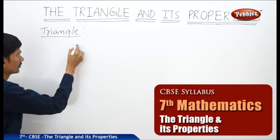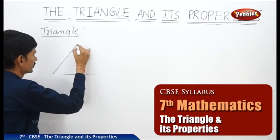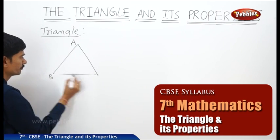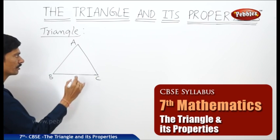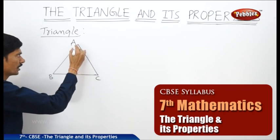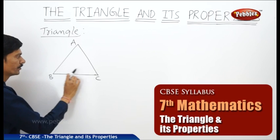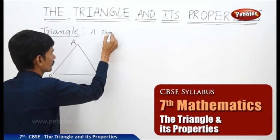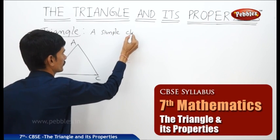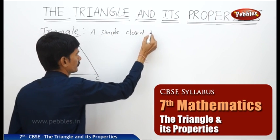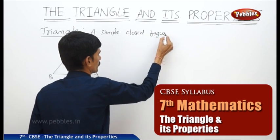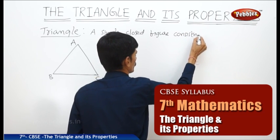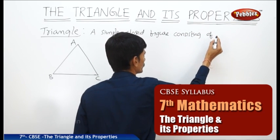If you draw a triangle, this is triangle ABC. It is a simple closed figure consisting of three line segments. The line segments are AB, BC, and AC.